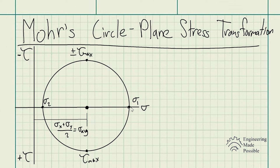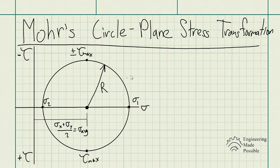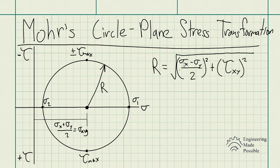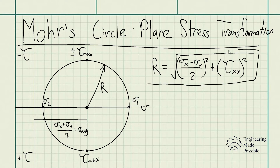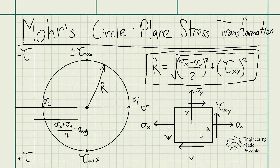Like any other circle, this one has a radius R. The equation for R is: R equals the square root of the quantity (sigma x minus sigma y) divided by 2, squared, plus tau xy squared. This is the equation you'll use to solve for the radius of Mohr's circle.